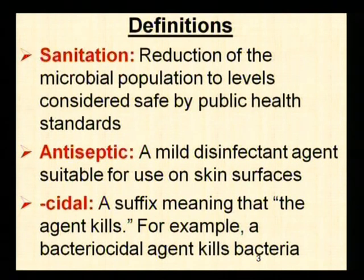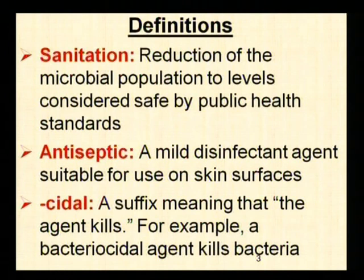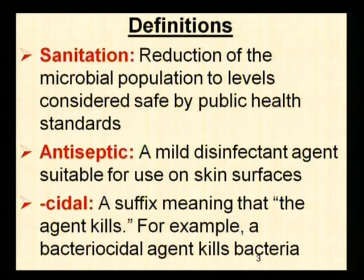Next is sanitation. Sanitation means we are reducing the number to that extent or level whereby the product or material is considered to be safe for consumption — that is known as sanitation, so the material has been sanitized. Then comes antiseptic. An antiseptic is a kind of disinfecting agent which is normally used for our body. Using phenyl for cleaning the floor cannot be called an antiseptic, because it is used for a floor. However, when we use an alcohol swab for cleaning our fingertips or the surface of our skin, that is an antiseptic. Iodine solution is another example.